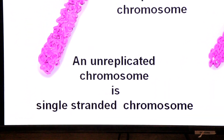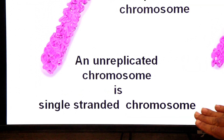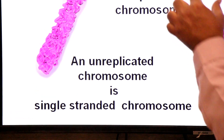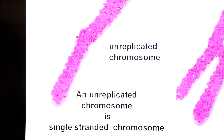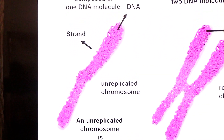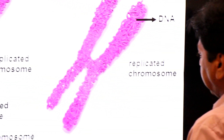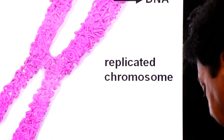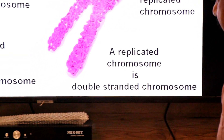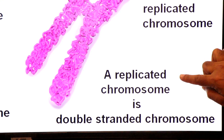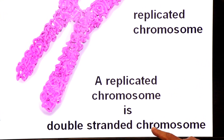An unreplicated chromosome is a single-stranded chromosome — it has only one strand. A replicated chromosome is a double-stranded chromosome, with two daughter strands.